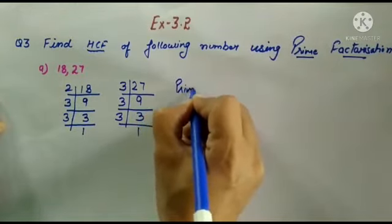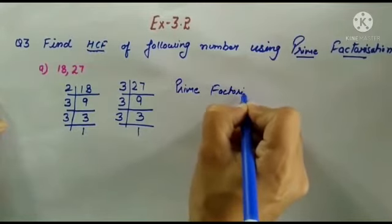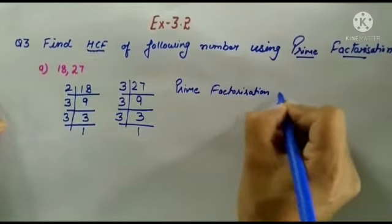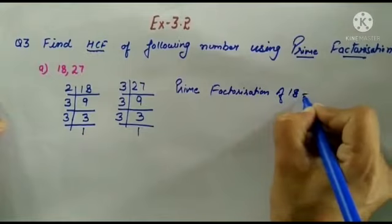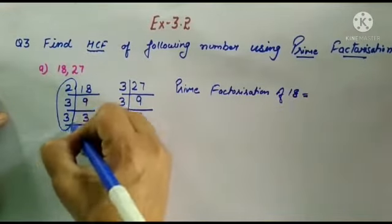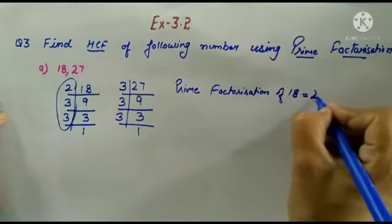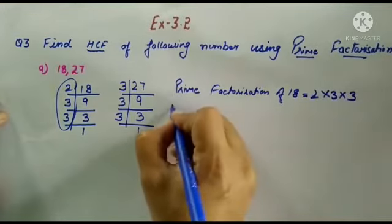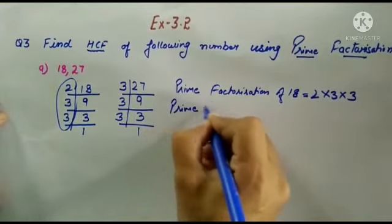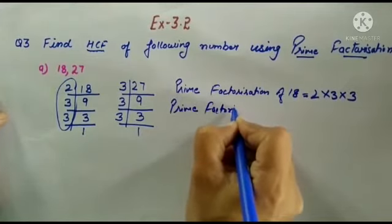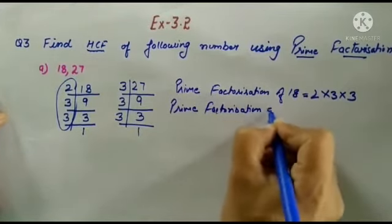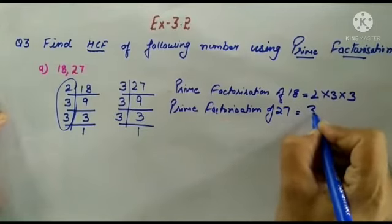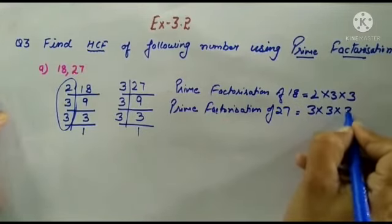Now we have to write here. Prime factorization of 18: this is prime factorization, 2 multiplied by 3 multiplied by 3. Now prime factorization of 27 is 3 multiplied by 3 multiplied by 3.